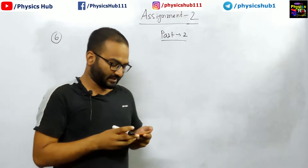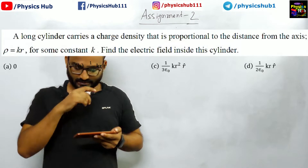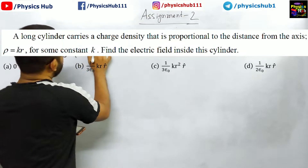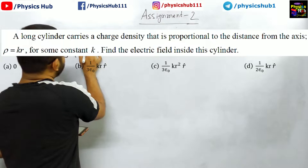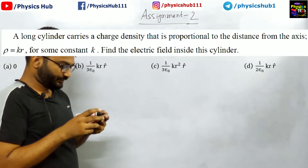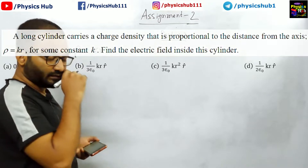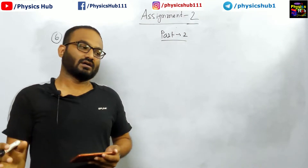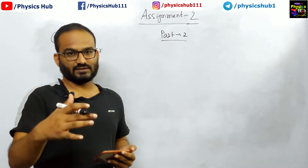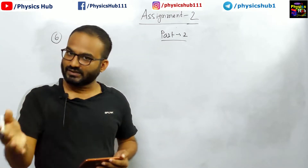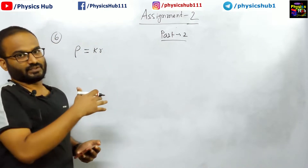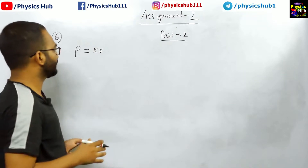Problem number 6 reads: a long cylinder carries a charge density proportional to the distance from the axis — rho equals k·r for some constant k. We need to find the electric field inside this cylinder. Using Gauss's law, we can calculate the electric field for charge distributions with spherical, cylindrical, or planar symmetry. Here, the symmetry is cylindrical, so we can utilize Gauss's law directly.